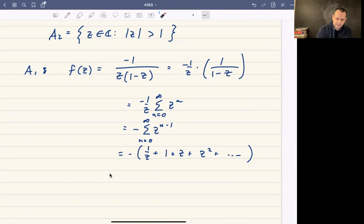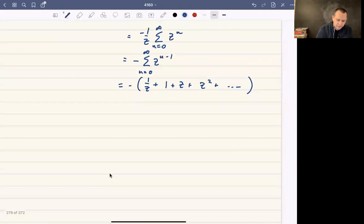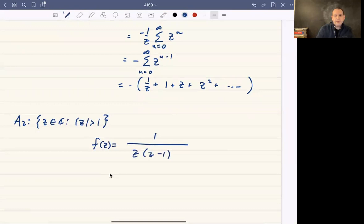So that's what happens over the inner annulus over A1. And then over A2, which again remember is the set of complex numbers whose modulus is strictly greater than 1, what we're going to do is the following. I'm going to look at the function f of z which is 1 over z times z minus 1.